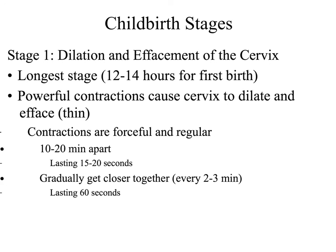The child is born in three different stages. Stage one is the dilation or effacement of the cervix — not the vaginal canal, but the cervix, which is basically the entrance into the uterus. The opening of the cervix is called the OS, and that is what needs to dilate. This is the longest stage of birth, about 12 to 14 hours for the first birth and 4 to 6 hours for subsequent births. There are powerful contractions that cause the cervix to dilate and get thinner.